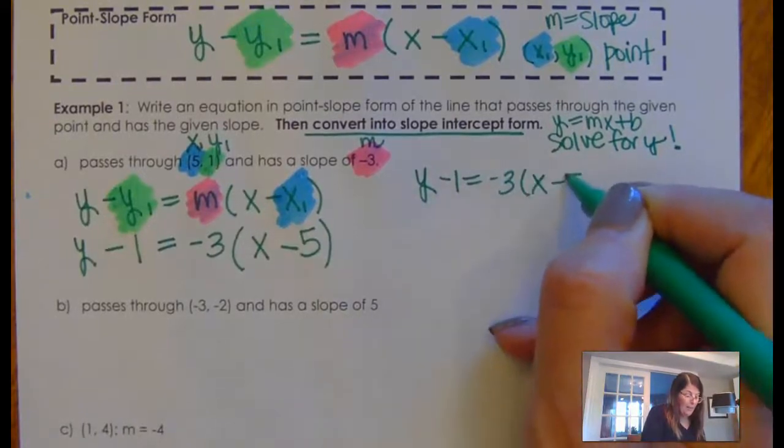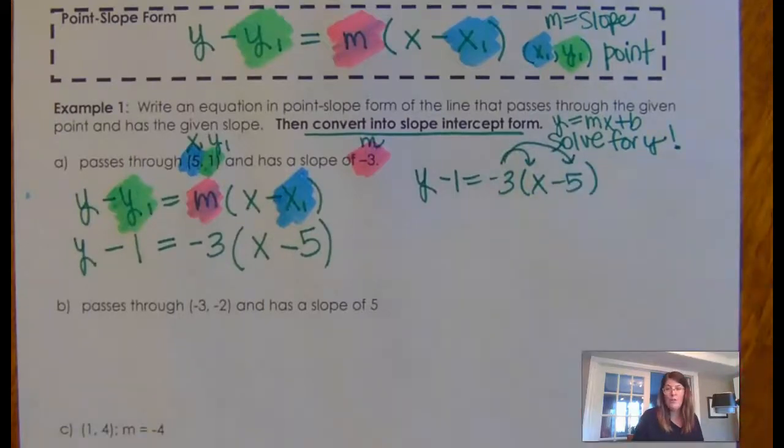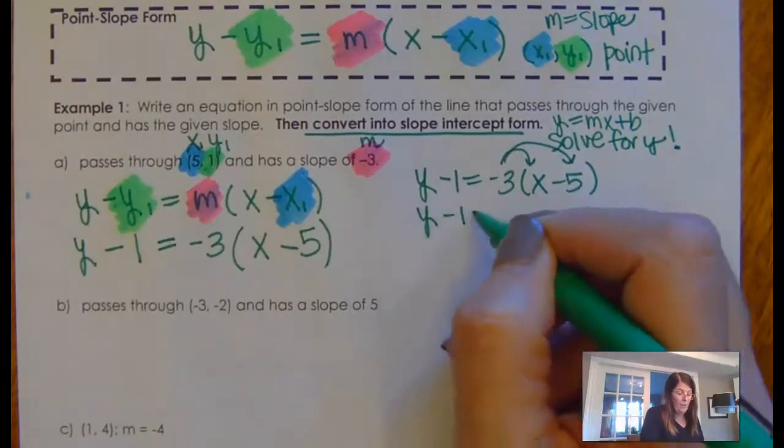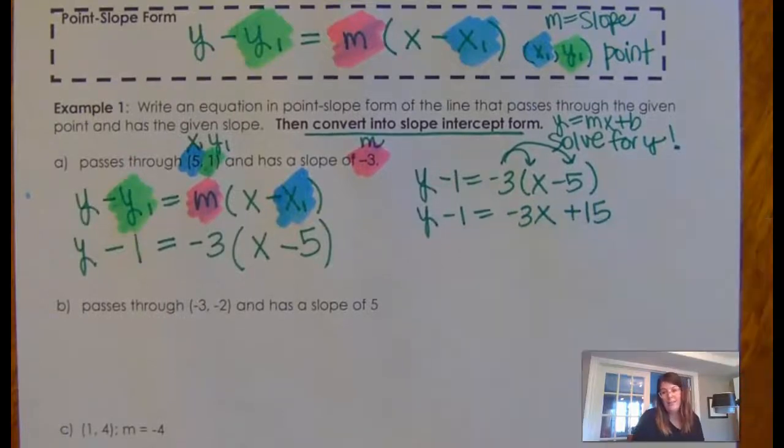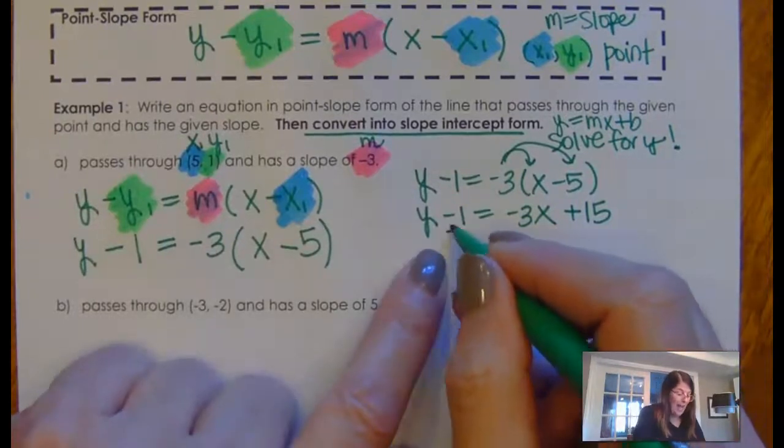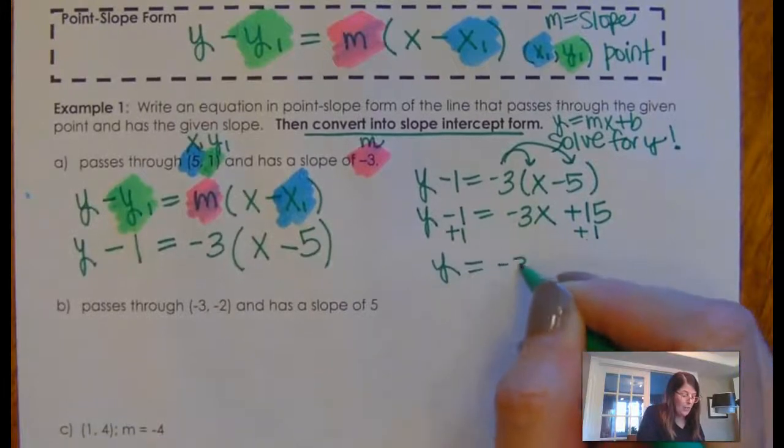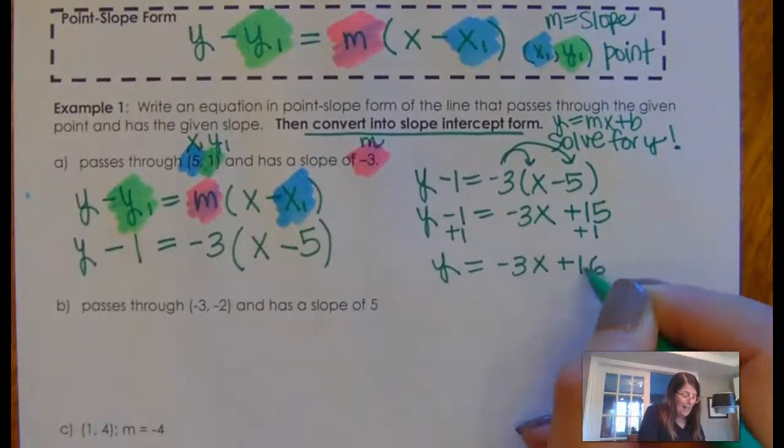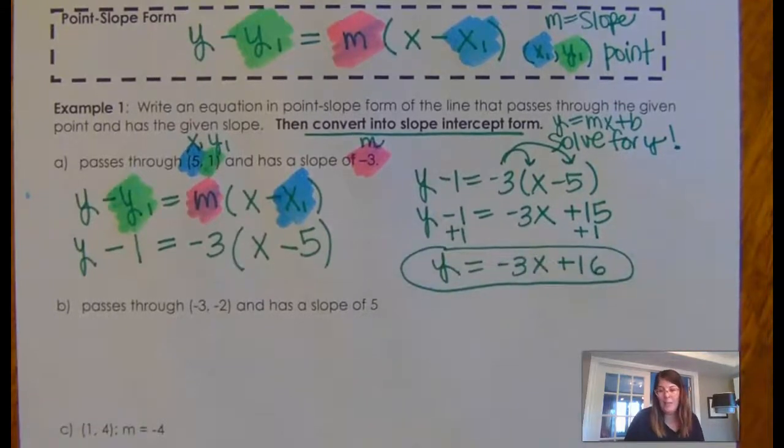Now, all I have to do is take this and solve it for Y. So when I'm solving this for Y, I'm going to take this negative 3 and distribute it to everything on the inside. Y minus 1 is negative 3X plus 15, right? Now, I'm trying to get Y alone, so I'm just going to add 1 to both sides. And my equation of the line in slope intercept form is Y equals negative 3X plus 16.